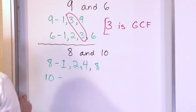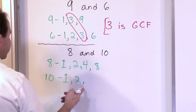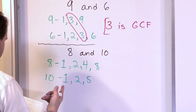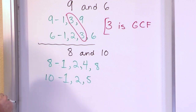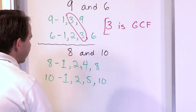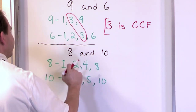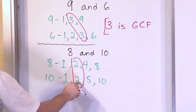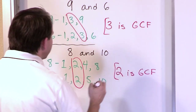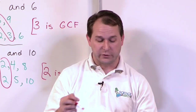Now we look at the number 10 and list its factors. 1 is always a factor. 2 is a factor because 2 times 5 is 10. 3 is not a factor. 4 is not a factor. But 5 is a factor because it can divide into 10 evenly. 6, 7, 8, and 9 are not factors because they can't divide into 10. But 10 is a factor because it divides into itself. Looking at both lists, the number 2 is the largest number common to both, so 2 is the greatest common factor.